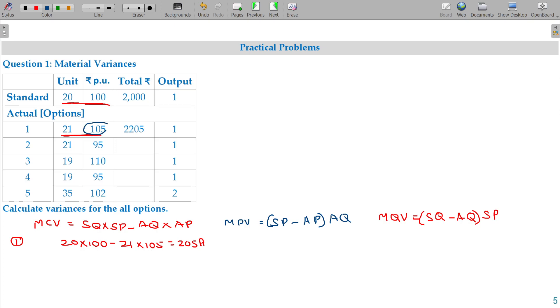205 extra spend. Material quantity, so you spend 5 rupees excess for the actual quantity of 21 units. So the final answer being 105 adverse.